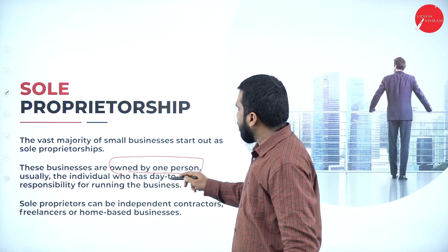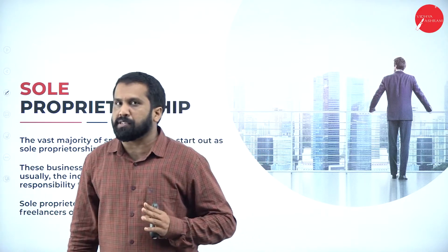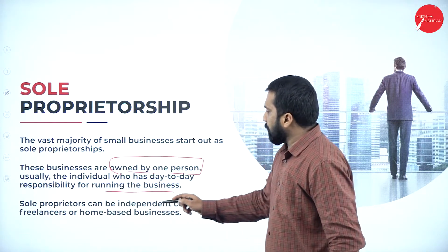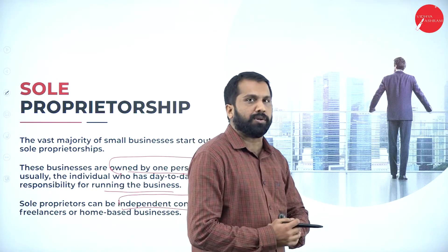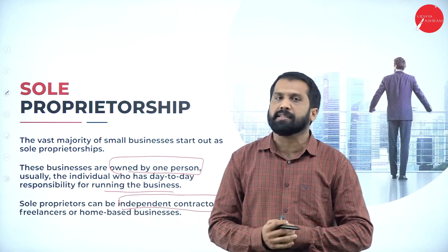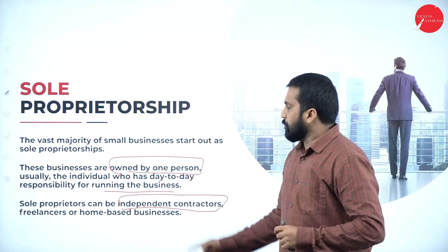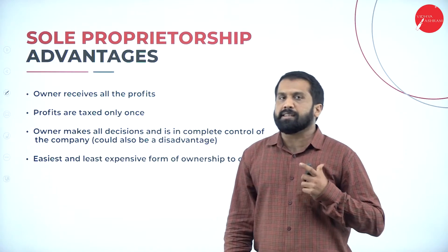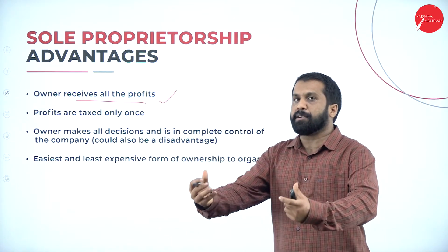The individual who has day-to-day responsibility for running the business is responsible for everything — whether it is a loss or profit. Sole proprietorship can be an independent contract. Unlike partnership, where you need permission from your partner to take decisions, in a sole proprietorship you are the one and only king and can take any decision. The owner receives all the profit — whatever profit is earned, 100% goes to him only.